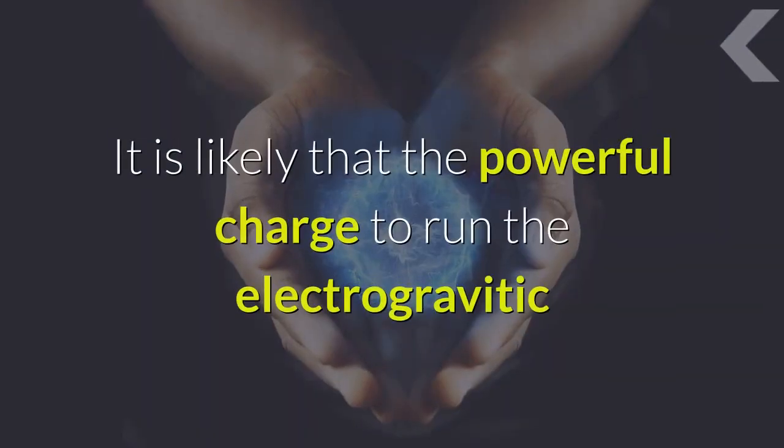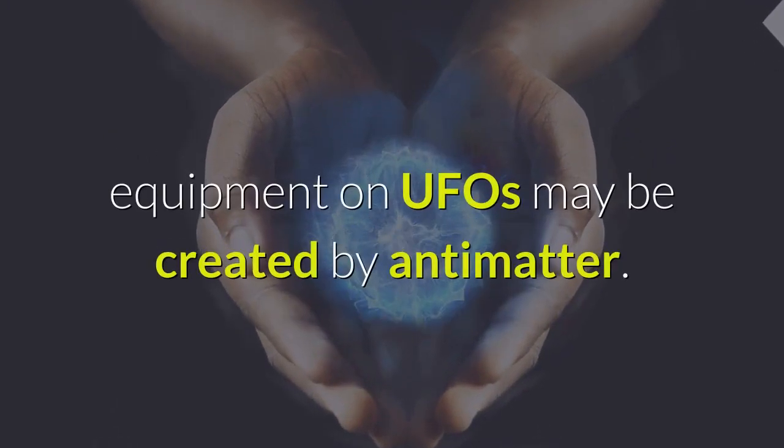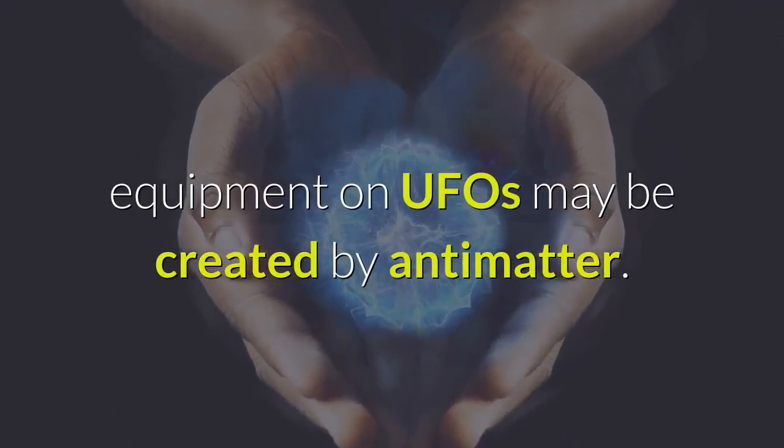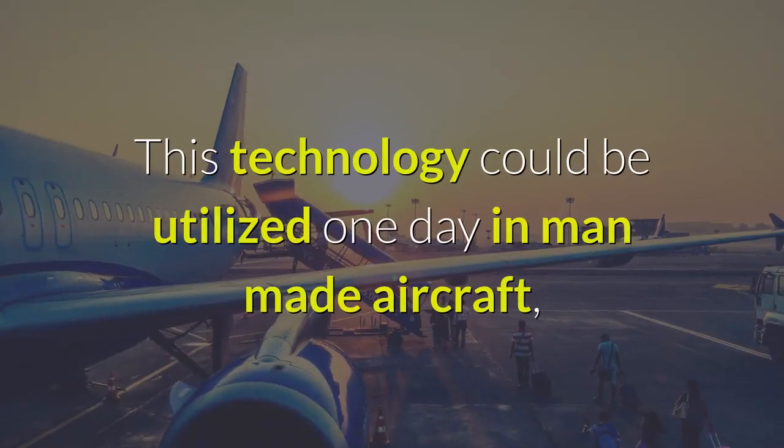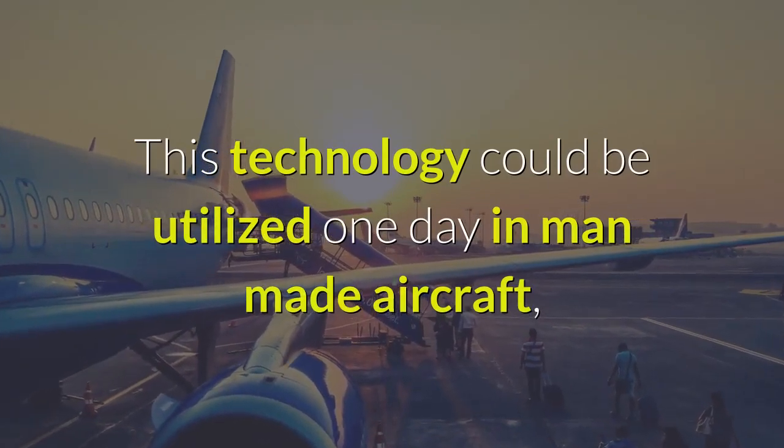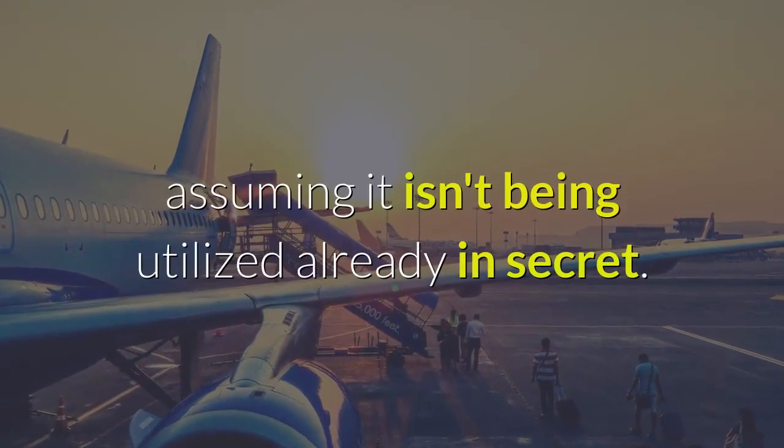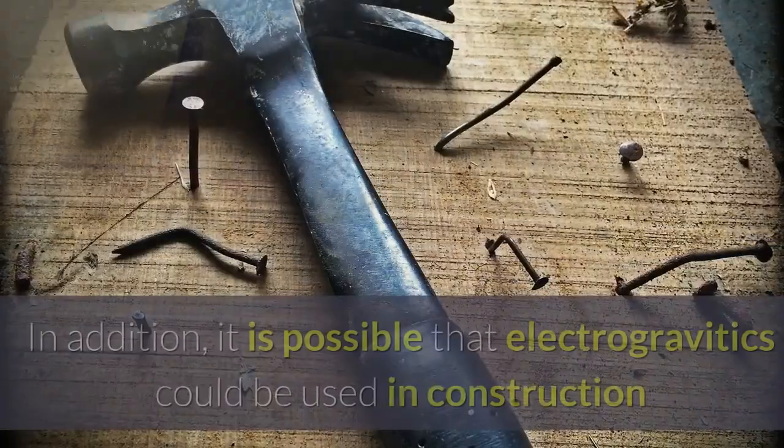It is likely that the powerful charge to run the electrogravitic equipment on UFOs may be created by antimatter. This technology could be utilized one day in man-made aircraft, assuming it isn't being utilized already in secret.